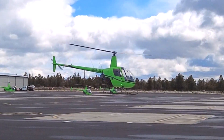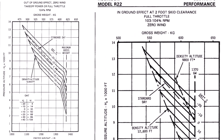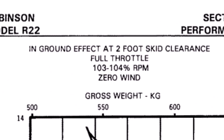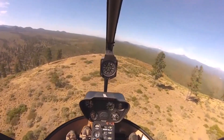The closer you get to the ground, the more effective this change is, so manufacturers have published performance charts for both out of ground effect and in ground effect performance, stipulating the hover height for which the in ground effect chart applies. For example, the R22 and R44 in ground effect performance charts specify within a two-foot skid height — so anything above that you should use the out of ground effect hover chart. When operating off airport, it's a good idea to never assume in ground effect performance and to always use the out of ground effect hover charts.